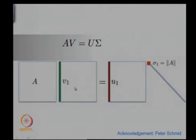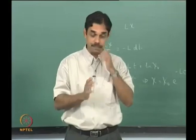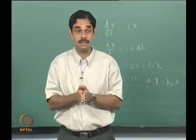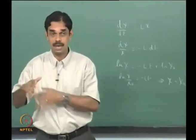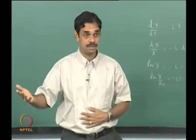To see it in matrix form: A, if it acts on v1, you will get u1. So v1 is the right singular vector. The evolution operator — or any operator — acts on the right singular vector and you will get another basis function u1, multiplied by a number.